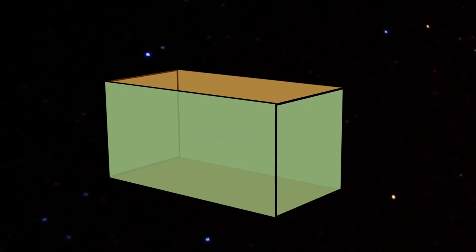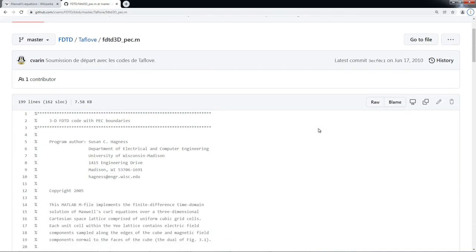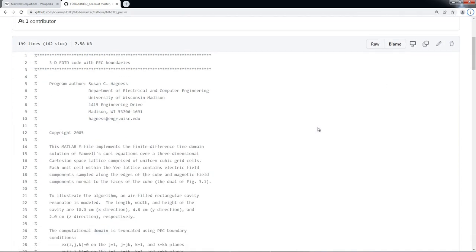The simplest version of the FDTD method calculates the fields in a three-dimensional volume enclosed by a perfect conductor. Lucky me, the basic version is available on the internet written by Suzanne Hackness.